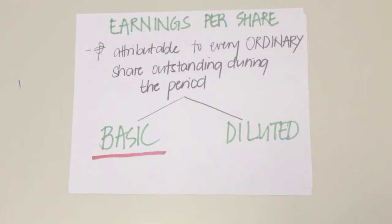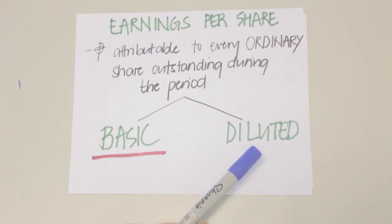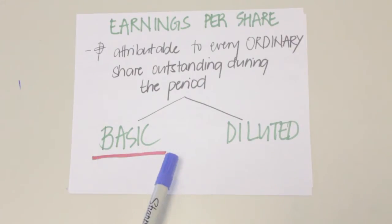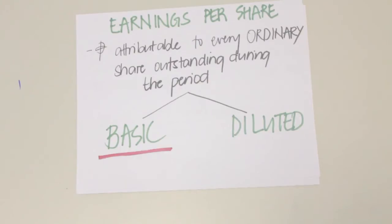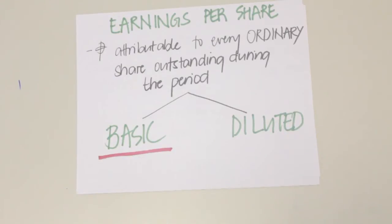Earnings per share can be presented in the income statement in two ways: basic earnings per share and diluted earnings per share. However, we would only be focusing on basic earnings per share. EPS presentation is required for enterprises whose shares are publicly traded or those who are still in the process of issuing ordinary shares in the public securities market. Note that public enterprises are required to present EPS, while non-public enterprises are not.